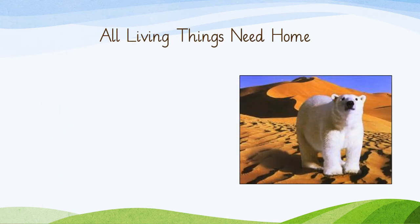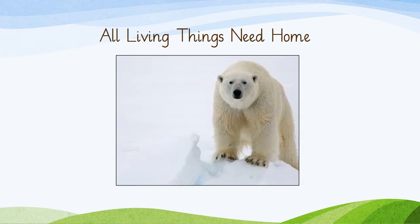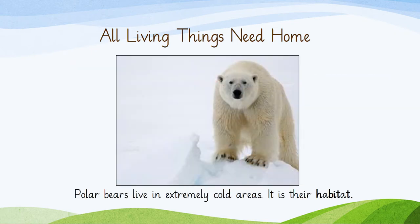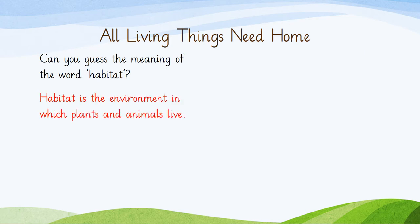All living things need a home. What is being shown in this picture? You can see a polar bear in a desert. What is wrong with this picture? The polar bear cannot live in a desert. A polar bear lives in cold places, and that is their habitat. Can you guess the meaning of the word habitat? The word habitat means the environment in which plants and animals live. Just as we saw in the case of a polar bear, its habitat is extremely cold places.